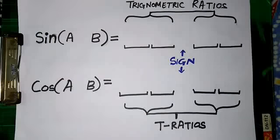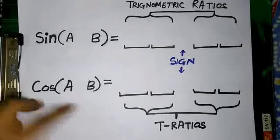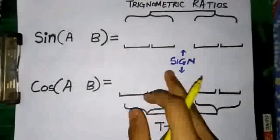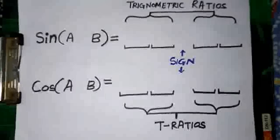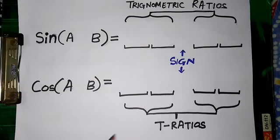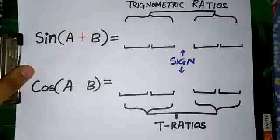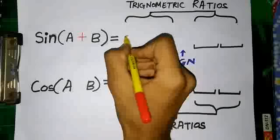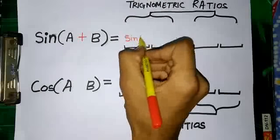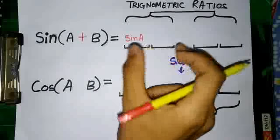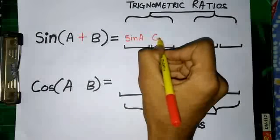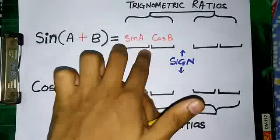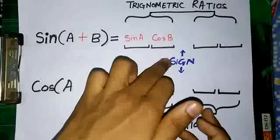First we're going to deal with the formulas of sin(A±B) and cos(A±B). In the formula of sin(A+B), we know sine is good so it'll maintain equality. It'll take the first part of the formula itself and give the second part to cos. It is maintaining equality — taking the first part itself and giving the second part to cos.